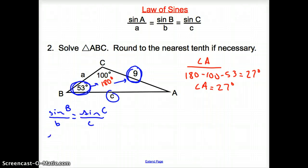So, sine of angle B which is sine of 53. That is going to go over 9. That is going to equal sine of 100. That is going to go over little c. Now, I am going to change these numbers into decimals and then cross multiply. So, let us go ahead and change them into decimals.